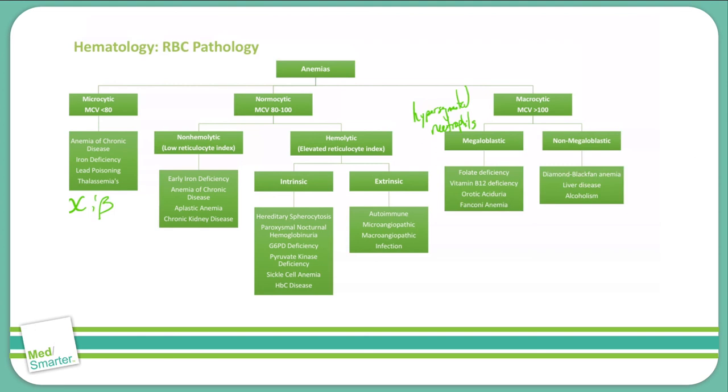And in non-megaloblastic anemia, that's often caused by Diamond-Blackfan anemia, liver disease, and alcoholism. We'll talk more about each one of these types of anemias later.